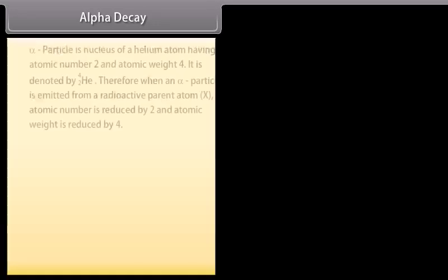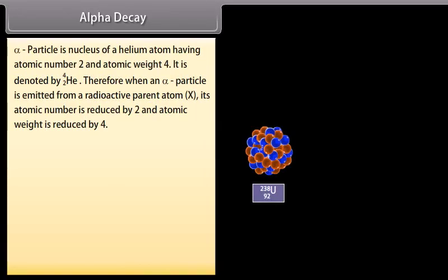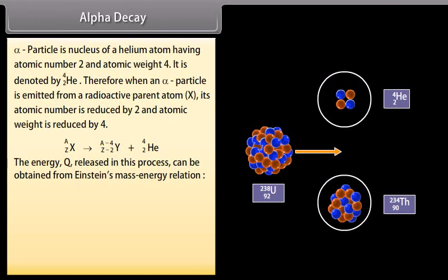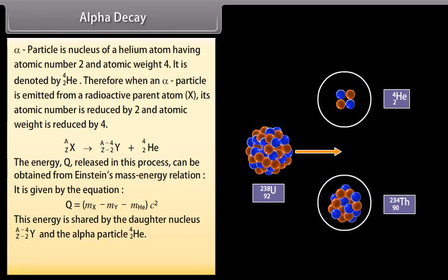Alpha decay. Alpha particle is nucleus of a helium atom having atomic number 2 and atomic weight 4. It is denoted by He-4. Therefore, when an alpha particle is emitted from a radioactive parent atom X, its atomic number is reduced by 2 and atomic weight is reduced by 4. It can be demonstrated as... The energy Q released in this process can be obtained from Einstein's mass-energy relation. It is given by the equation Q is equal to Mₓ minus Mᵧ minus M-He into C². This energy is shared by the daughter nucleus and the alpha particle.